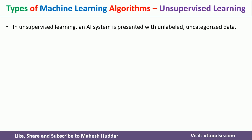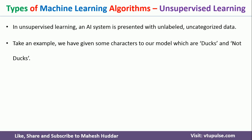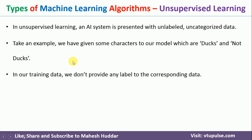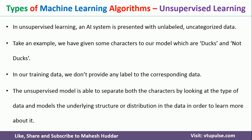Now, coming to unsupervised learning. In unsupervised learning, the artificial system is given unlabeled or uncategorized data — the data does not have any labels. For example, we give some characters to our model — they may be ducks or not ducks — but we give this data without any label. The model will find the hidden patterns in the data, such as similarity index or distance between data points, and divide the data into multiple groups or clusters.